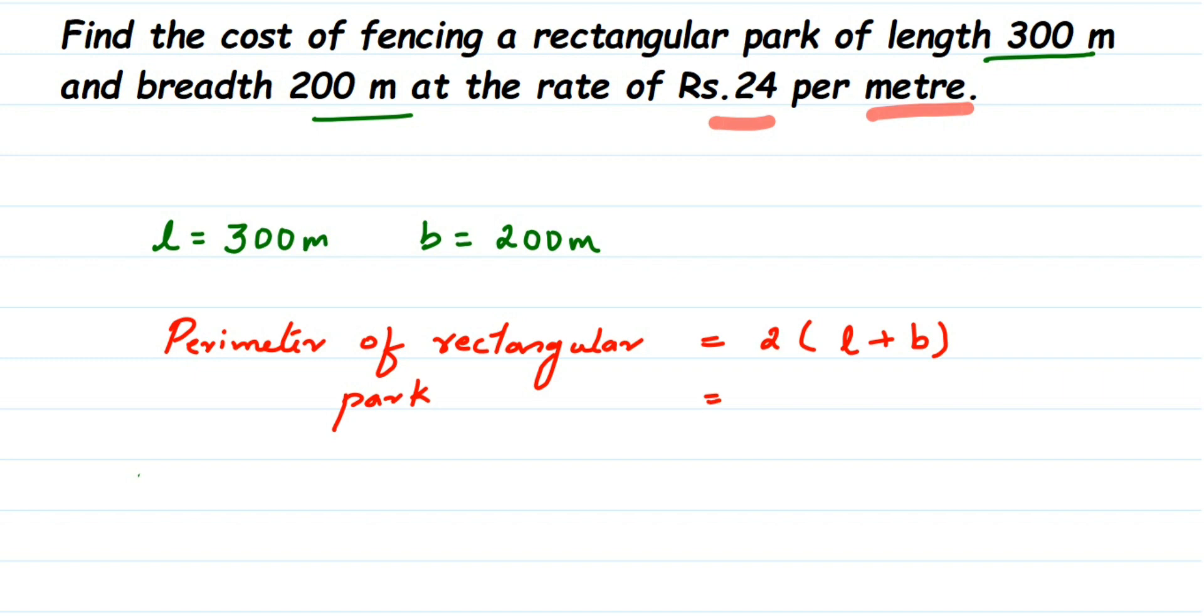So it's 2 into length is 300, so 300 plus breadth is 200. 300 plus 200 is 500, so 2 into 500 which is equal to 1000. So we got here total perimeter is 1000 meters. That is total distance where we have to put the fence is 1000 meters.